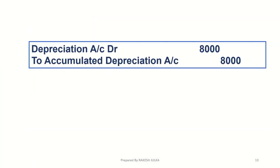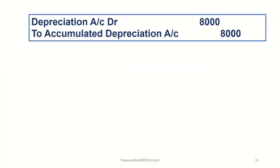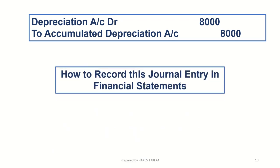The journal entry for depreciation is: Depreciation Account — Debit; to Accumulated Depreciation Account — $8,000. Now let's look at how to record this journal entry in the financial statements.